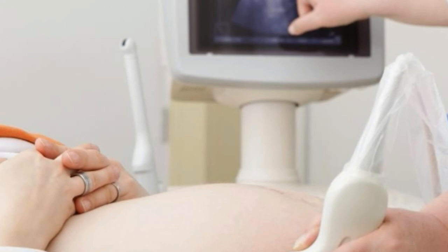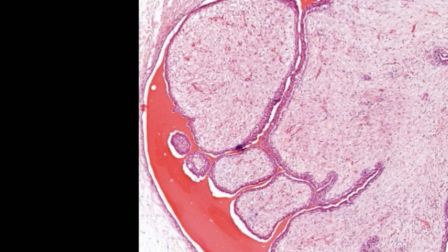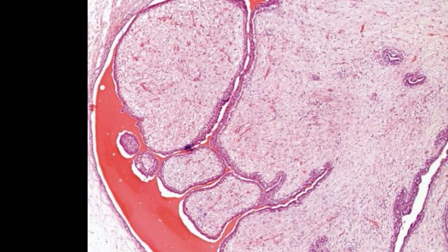One example of a hypoechoic mass seen in the thyroid gland is a benign tumor called follicular adenoma. Confusingly, follicular adenoma masses may also appear hyperechoic, where more sound waves are reflected back giving a brighter appearance. In either case, follicular adenoma masses seen on ultrasound can tend to be surrounded by a hypoechoic ring.